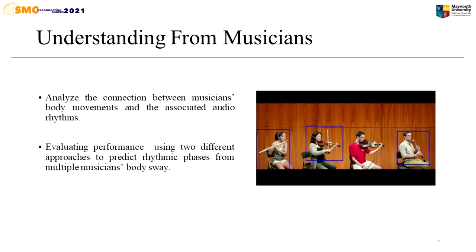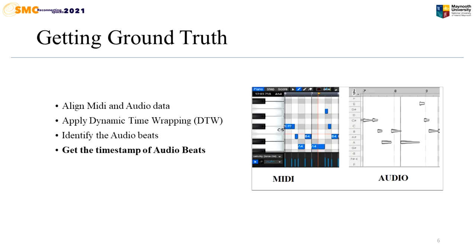So we can say that this dataset is perfect for our research. We tried to analyze the connection between the musician body movements and the associated audio rhythms, and also tried to evaluate the performance using two different approaches to predict the rhythmic phase from multiple musicians' body movements. To understand the musical phases, the timing of the audio beats are very important. The audio beats are considered as the ground-truth value in the experiment. To compute the audio beats, an audio-MIDI alignment technique was used. The MIDI file representation was first converted into its equivalent audio. Dynamic time warping was applied to effectively match and align the audio recordings with the corresponding MIDI transcriptions, after which the beats were estimated from the aligned MIDI information.